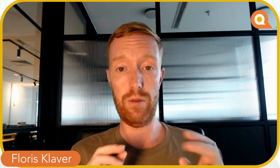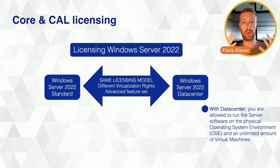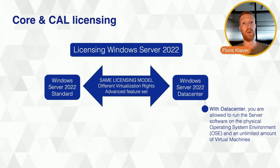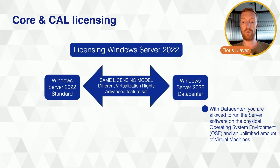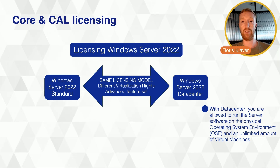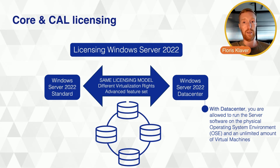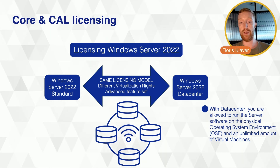Windows Server comes in these two different flavors, which we call different editions. One of the biggest differentiators between the two is the virtualization rights you get. With Windows Server Datacenter, if you license your physical machines with Datacenter, you are allowed to run the server software on the physical operating system environment and on top of that an unlimited amount of virtual machines.